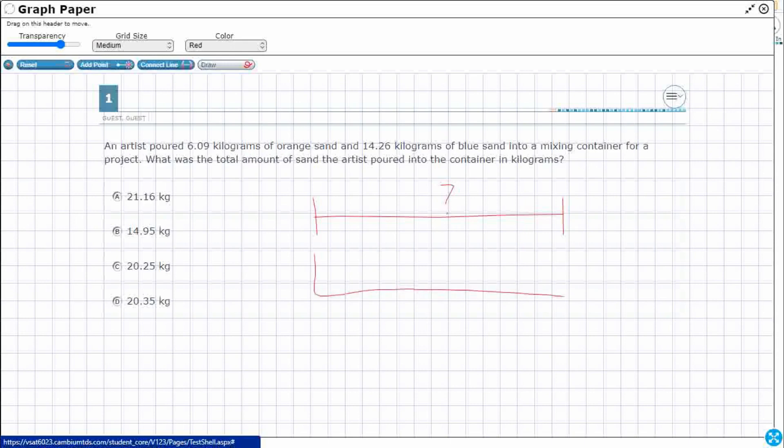So we'll put this back together real quick. 6.09. So I'm going to line them up, but here's the nice thing. Both of these numbers go to the same decimal place.